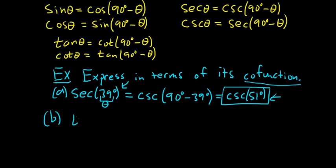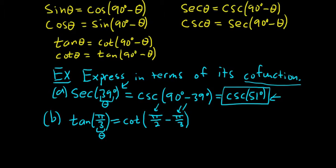Let's try a harder one. Tangent of pi over 3. So the cofunction for tangent is cotangent. So this would be cotangent. But now it's not degrees, it's radians. So this is our theta. So here we have to put not 90 but pi over 2 minus our theta, which is pi over 3. So it's kind of like 90 minus theta, except it's pi over 2 minus theta.